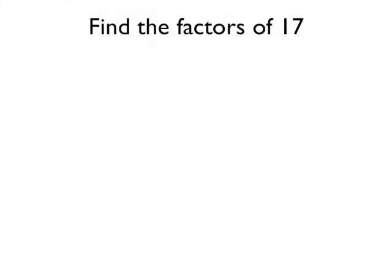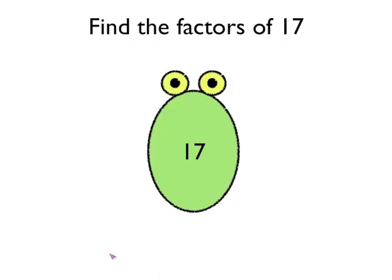Let's do another one now. Let's find the factors of 17. So we draw our factor bug, put 17 in the middle and then we think of pairs of numbers that times together to make 17. We can do 1 times 17, but actually that's it.